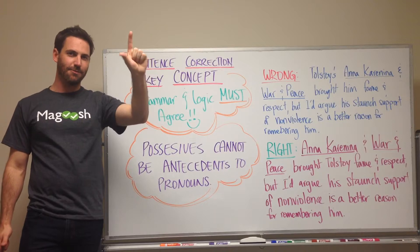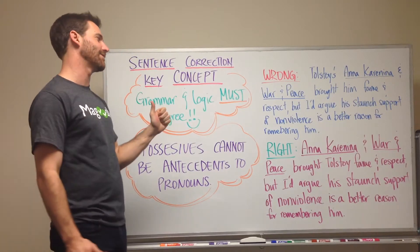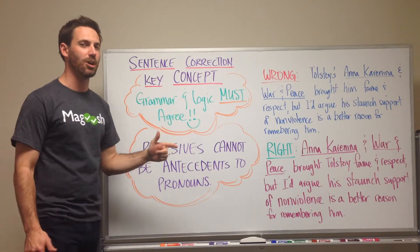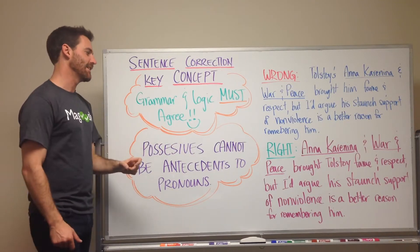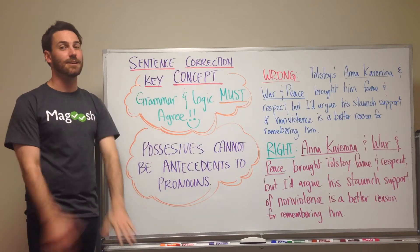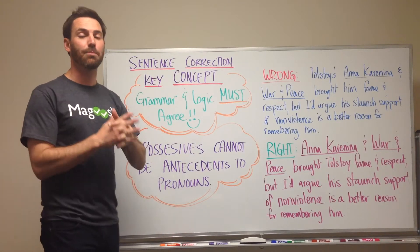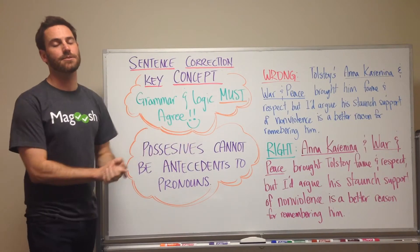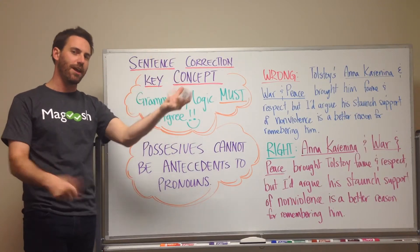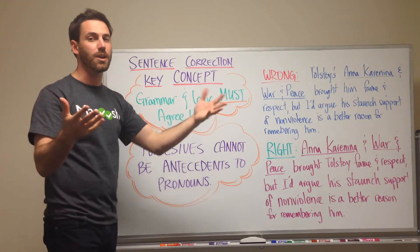Does anybody remember what an antecedent is? It's something that comes before — it's got the prefix 'ante' on it. So basically an antecedent is just a noun that the pronoun is replacing. And so in English grammar, we want our pronouns and their antecedents to agree.